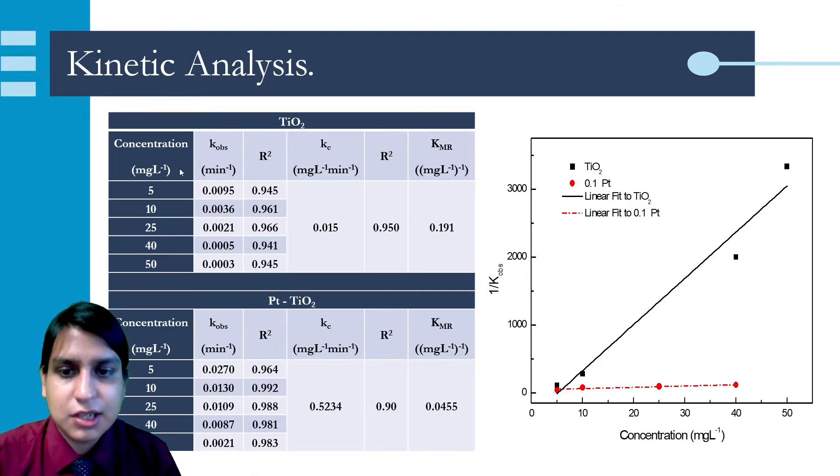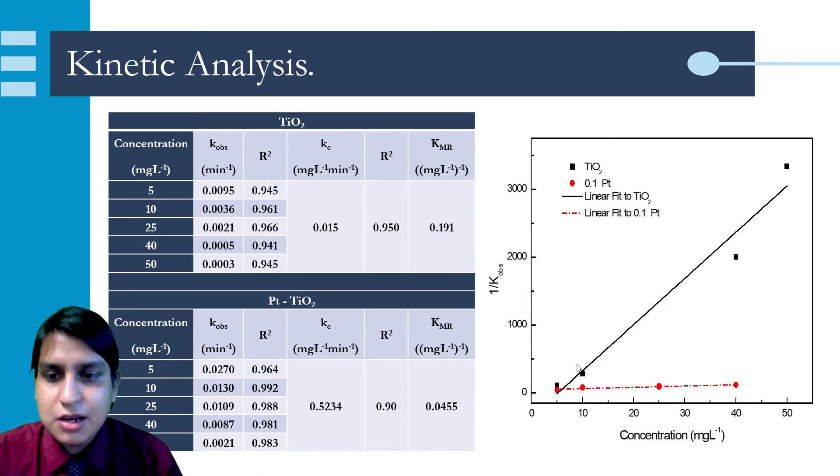The obtained results can be explained using the Langmuir-Hinshelwood model. In all cases, the rate constant decreases as the initial dye concentration of the solution increased. Calculating the value of the adsorption equilibrium constant from the intercept and rate constant surface reaction from the slope of the fitted straight line, it is shown that the presence of the dopant enhances the surface rate constant when compared to the undoped titanium dioxide.